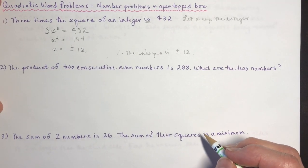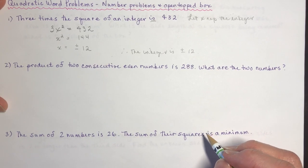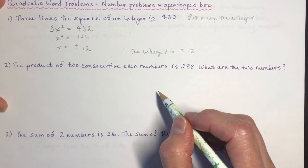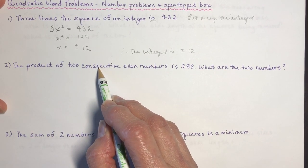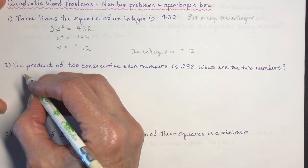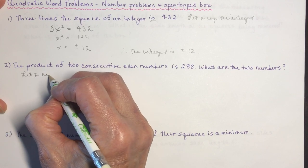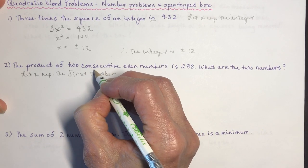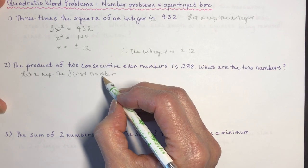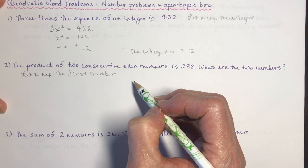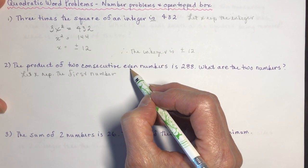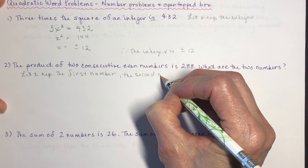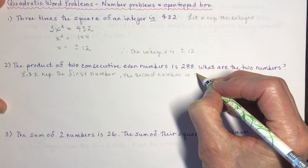Number two: the product of two consecutive even numbers is 288. What are the two numbers? Let x represent the first even number. Consecutive means the one right before or after it. Since they're even numbers, the second number is going to be x plus 2.